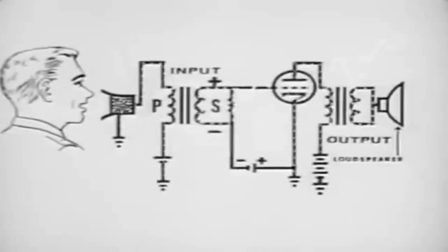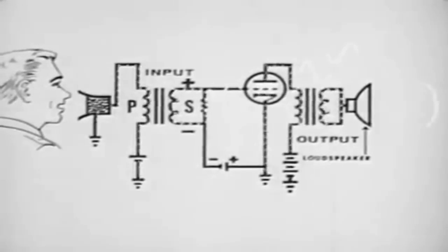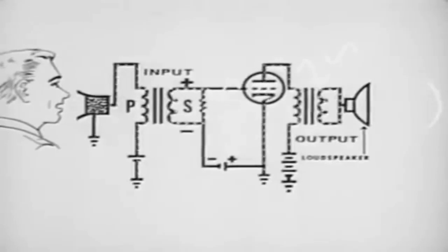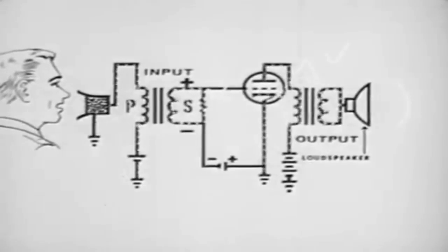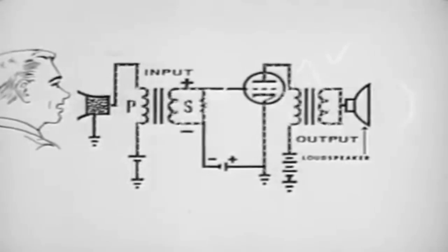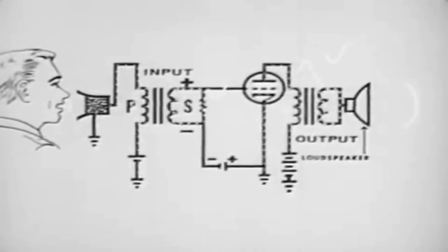We can then apply this energy to the grid of a vacuum tube and thus cause the current through the tube to vary in accordance with the voltage applied to the grid. The changing current flow through the tube can now be used to develop a much higher voltage across a plate load and either drive a speaker or another amplifier tube.